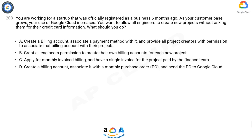A: Create a billing account, associate a payment method with it, and provide all project creators with permission to associate that billing account with their projects. B: Grant all engineers permission to create their own billing accounts for each new project. C: Apply for monthly invoiced billing and have a single invoice for the project paid by the finance team. D: Create a billing account associated with a monthly purchase order (PO) and send the PO to Google Cloud.